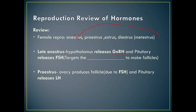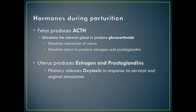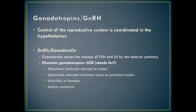During proestrus, the ovary produces a follicle due to FSH, and the pituitary releases LH. During parturition, the fetus produces ACTH — adrenocorticotropin — which stimulates the adrenal gland to produce glucocorticoids. These stimulate uterine contractions, and the uterus produces estrogens and prostaglandins. The pituitary then releases oxytocin in response to cervical and vaginal stimulation. Oxytocin helps with overall wellbeing, calmness, and milk let-down.